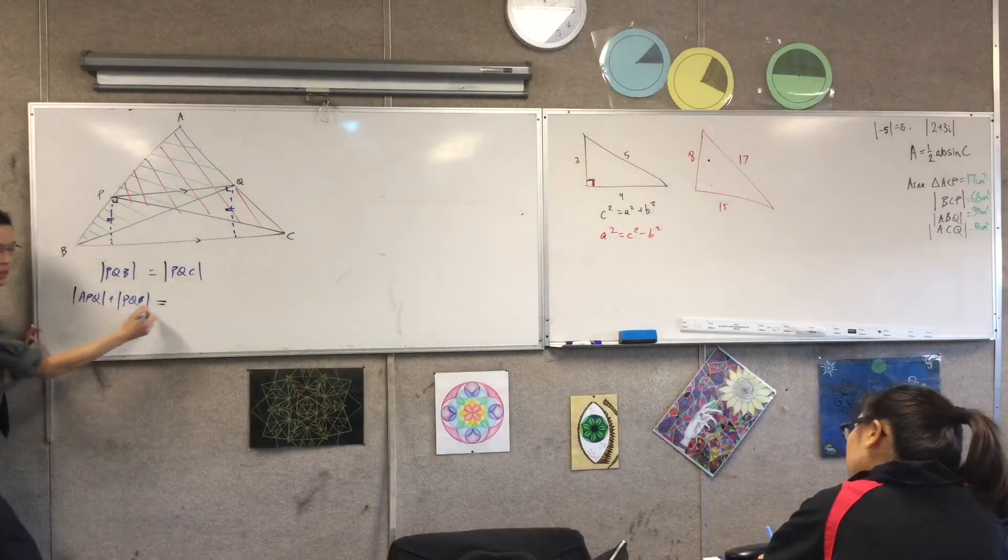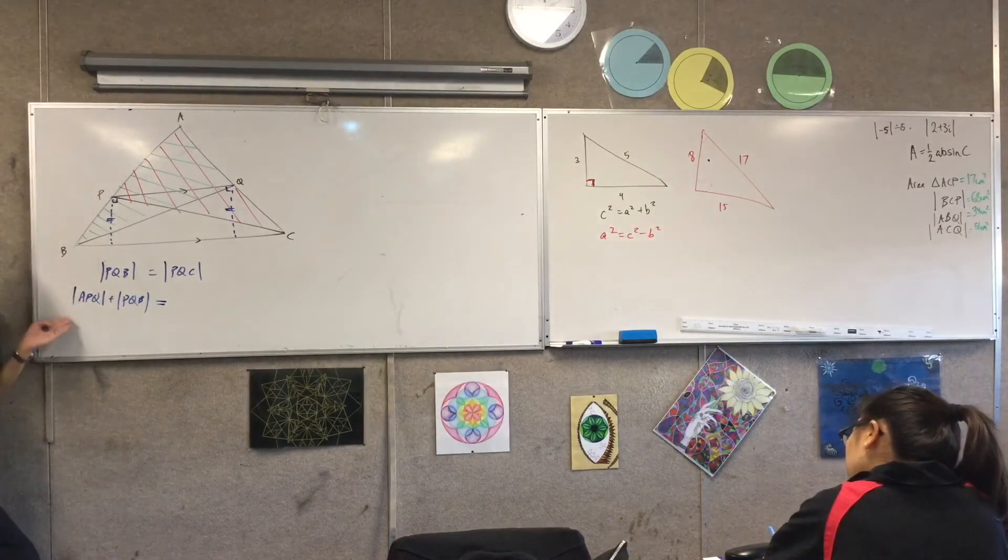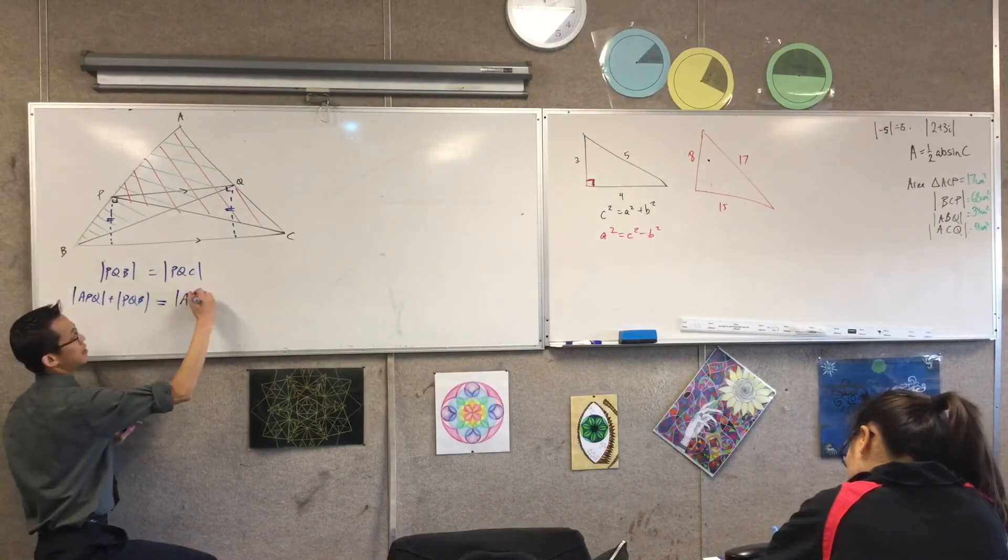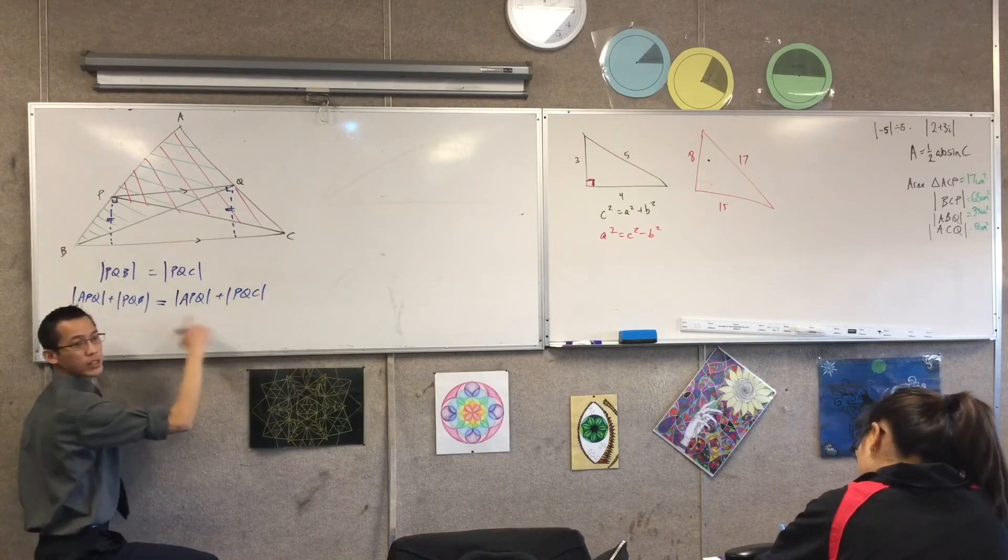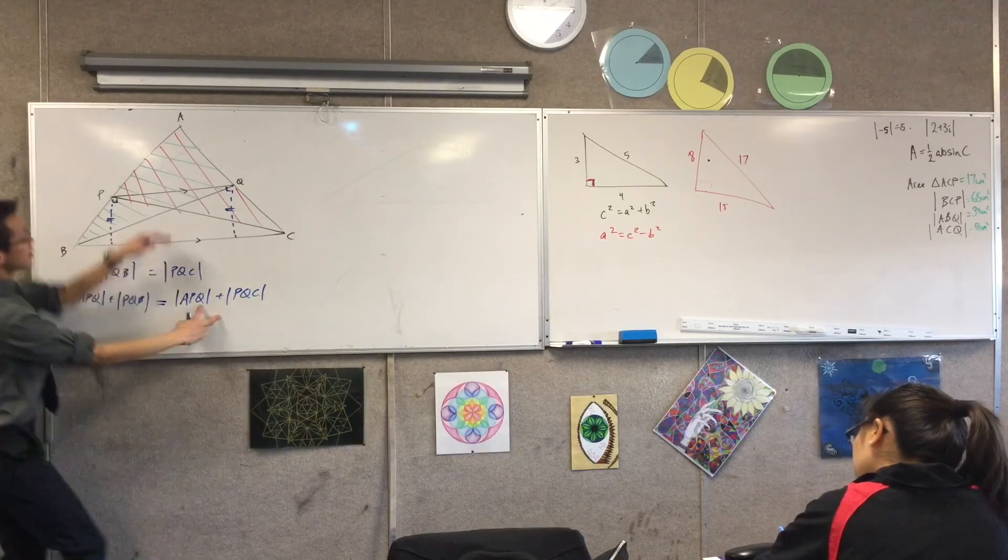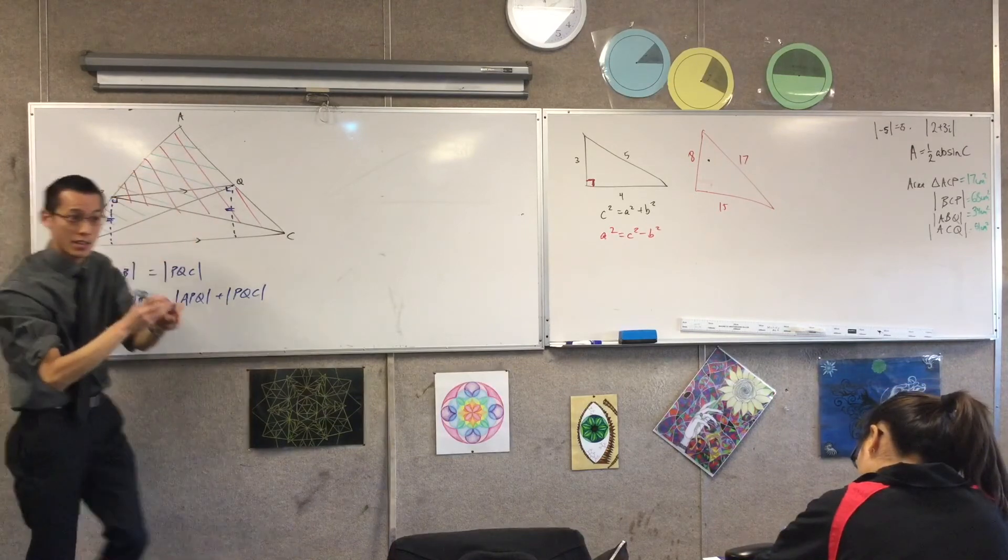But, of course, this is an equation. You can't just go adding things to one side because you like it, right? If you add something to one side, you've got to add it to the other, yeah? So, let's add APQ to that side. But, what have I done? What's this? This, this is APQ plus PQC. This is the red area, is it not, right?